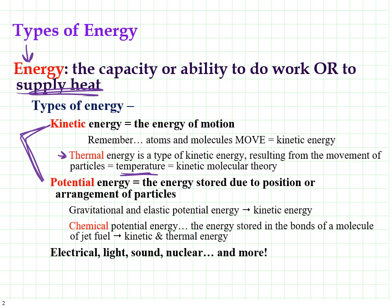Potential energy — we talk about that in middle school science with gravity. If you hold something way up high off the earth, it has more potential energy because it has more space to fall. For us in chemistry, potential energy — the energy of position or arrangement — is all about how atoms are bound together in molecules. We have lots of energy stored in chemical bonds. This is our potential energy in chemistry. We're going to focus mostly on kinetic, heat, thermal energy, and potential energy stored in chemical bonds.